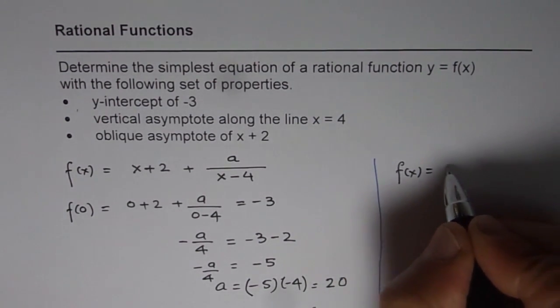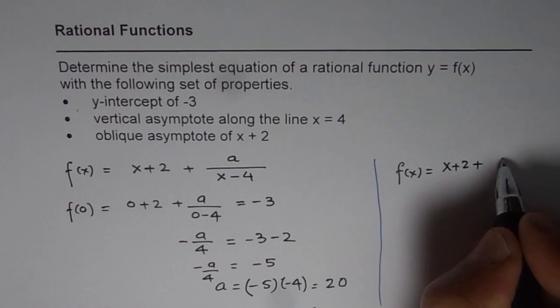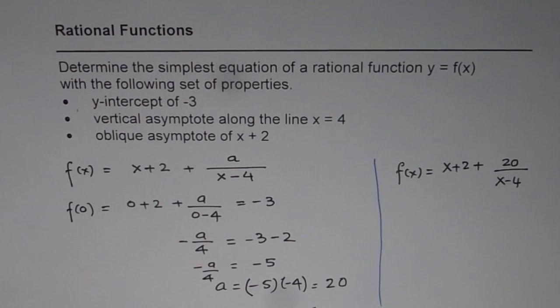f(x) equals to x + 2 plus 20 over x - 4. That is the rational function.